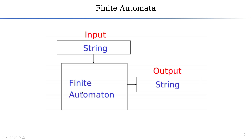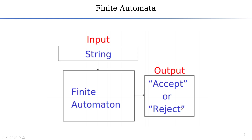In finite automata we have two things: input and output. Input is in the form of a string, and output is not in the form of a string — it is whether a particular input is accepted or rejected by that machine. Finite automata is a mathematical model. It takes input from the user in the form of a string and gives as output whether that string is accepted or rejected.